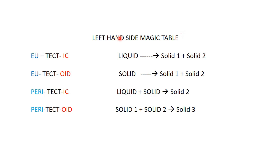Here is the magic table. I have colored and syllabified certain terms. The syllabification I use here is: 'very thick, very thick oil' — please understand this is for mnemonic purposes. The supporting values are: liquid gives solid one plus solid two; solid gives solid one plus solid two; liquid plus solid gives solid two; solid one plus solid two gives solid three. The magic table helps build a foolproof concept of what is on the left-hand side of each reaction equation.